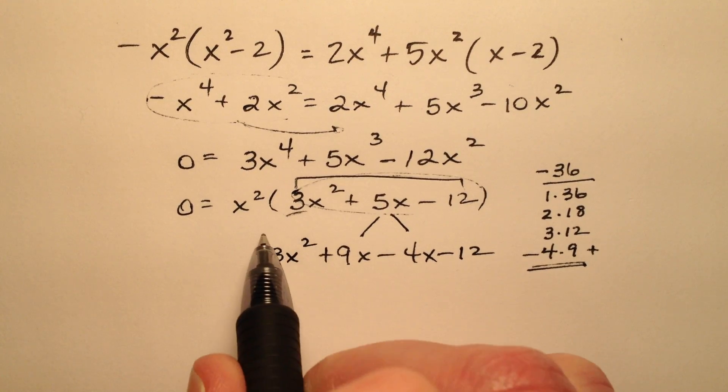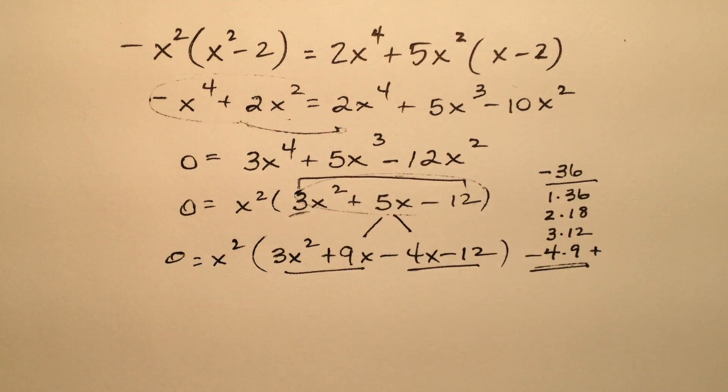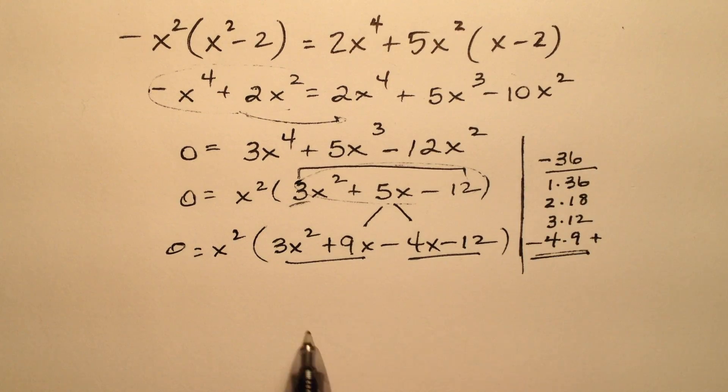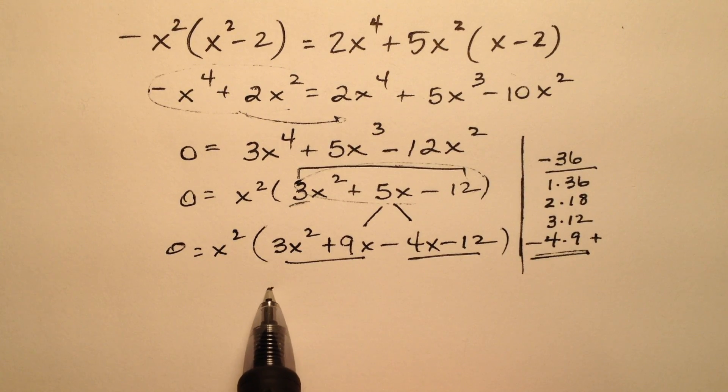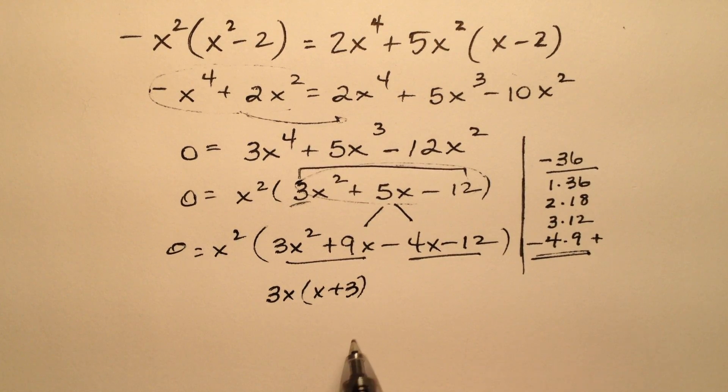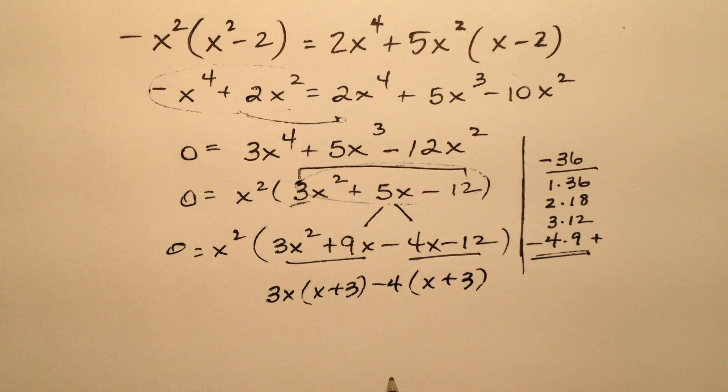The other terms are going to come along for the ride. So I'm going to do factor by grouping now. I can pull out a 3x here and I'm left with x plus 3, and I can pull out a minus 4 here, leaving me with x plus 3.